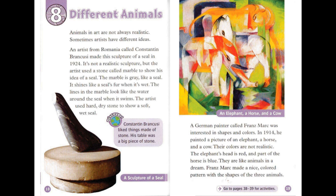Constantin Brancusi liked things made of stone — his table was a big piece of stone. A German painter called Franz Marc was interested in shapes and colors. In 1914, he painted a picture of an elephant, a horse, and a cow. Their colors are not realistic. The elephant's head is red, and part of the horse is blue. They are like animals in a dream. Franz Marc made a nice, colored pattern with the shapes of the three animals.